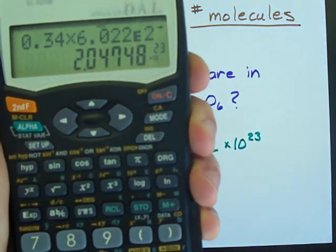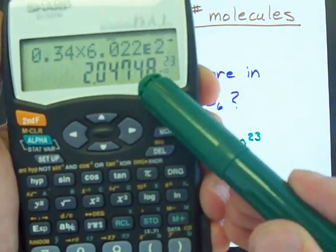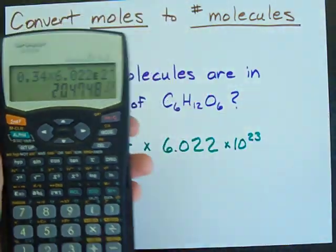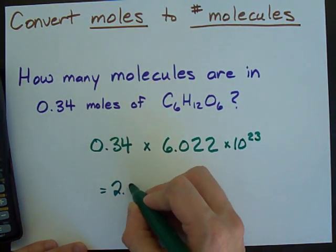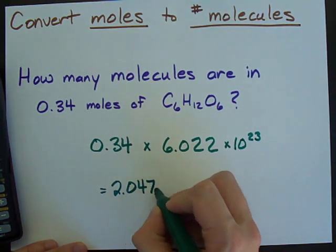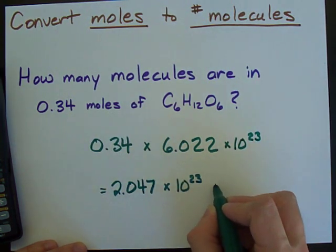What I get is 2.047 times 10 to the 23. So my answer is 2.047 times 10 to the power of 23 molecules.